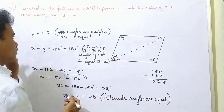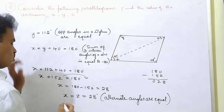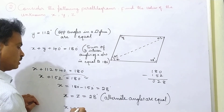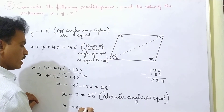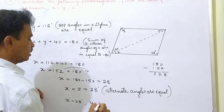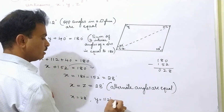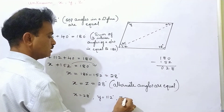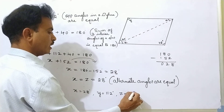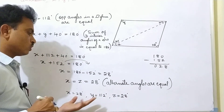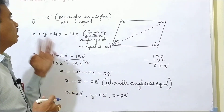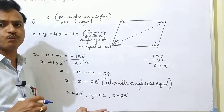So now: X is equal to 28 degrees, Y is equal to 112 degrees, and Z is equal to 28 degrees. We got all three unknown values.